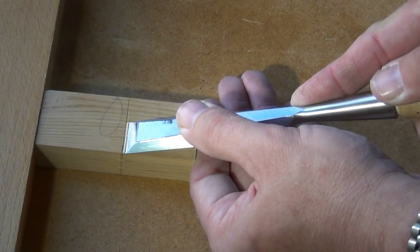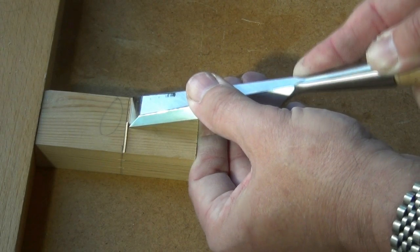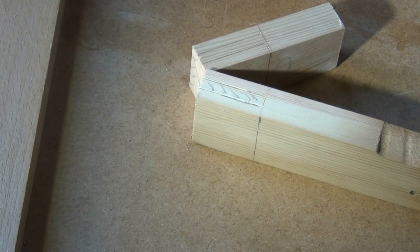Now with the chisel I can create a little groove for my saw to sit in. Now we can pop these in the vise and make the saw cuts.